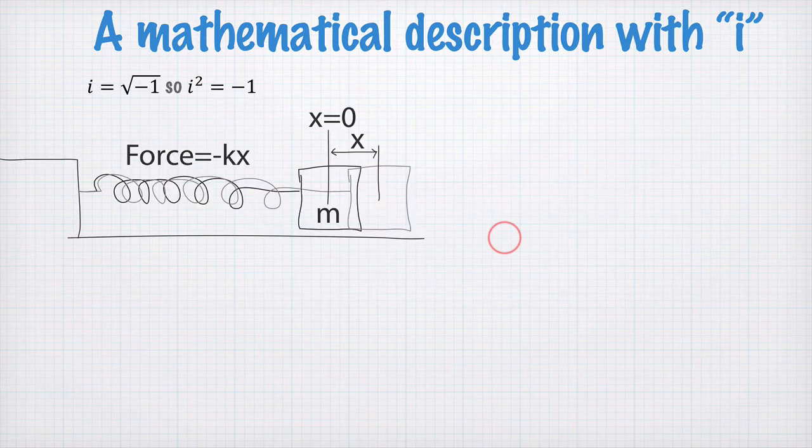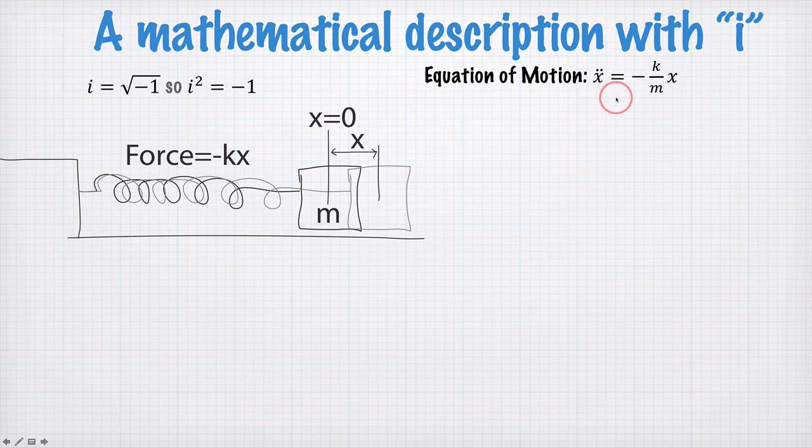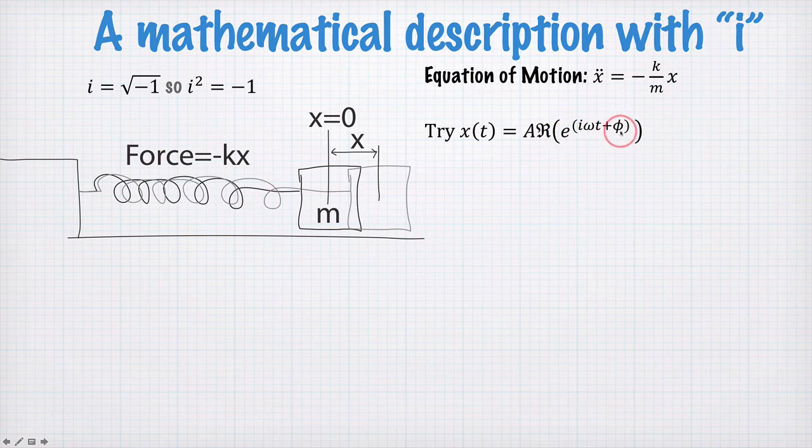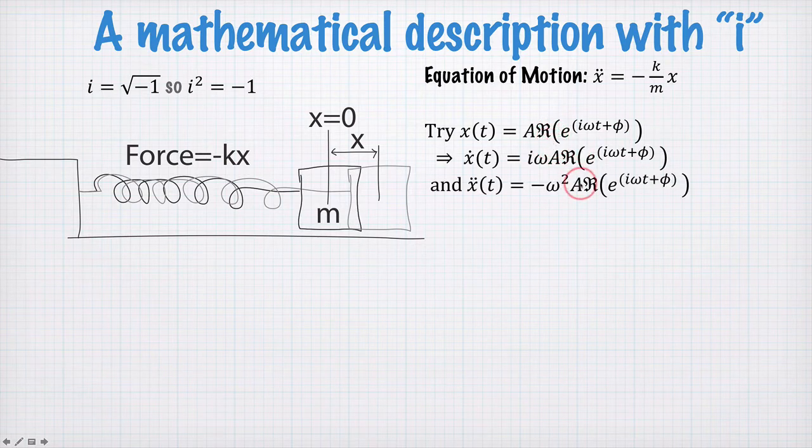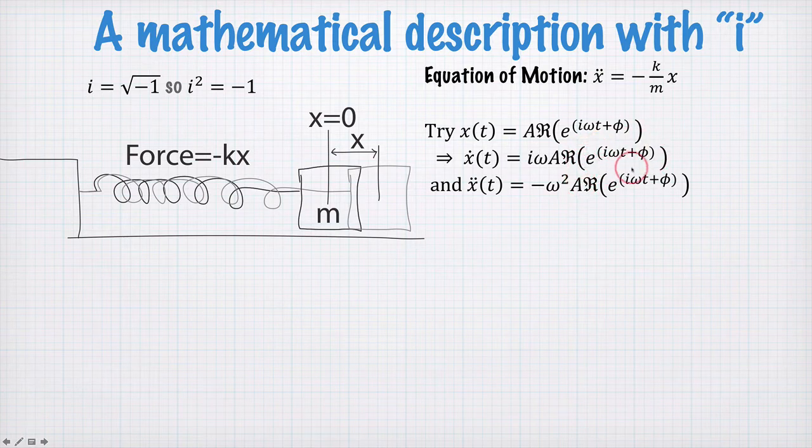Well, one way to do it, solve this problem, is take our equation of motion, and then as a solution, we write down A times the real part of e to the i omega t plus phi. So we just look at the real part of this and throw away the imaginary part. And we can take the real part all the way through the derivation. The derivation is exactly the same as the one I just showed you, except now, wrapped around this e to the i omega t plus phi is the real part.